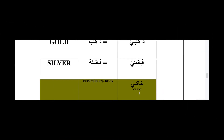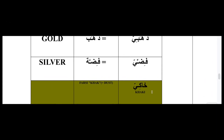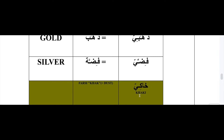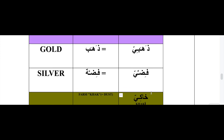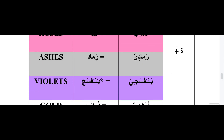We use the word خاكي for the color khaki. It comes from the Farsi word خاك, which means dust. So خاكي means khaki-colored, and the feminine form is خاكية, adding التامربوطة.